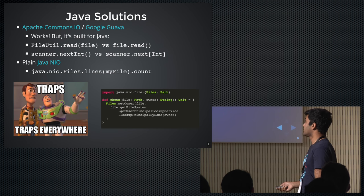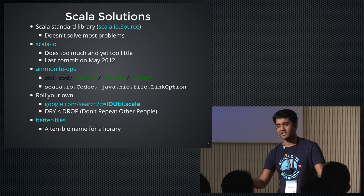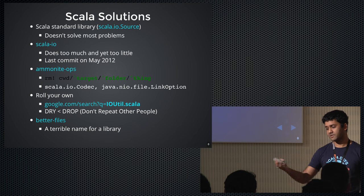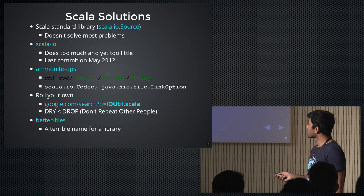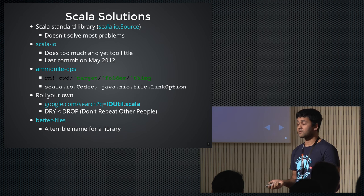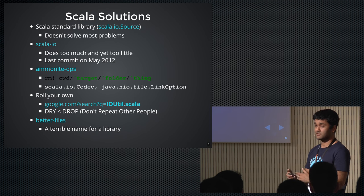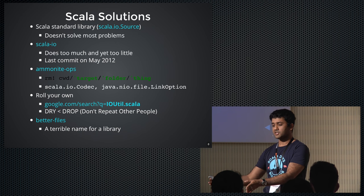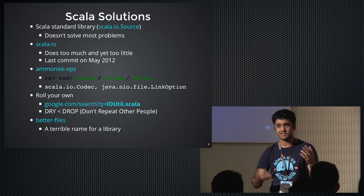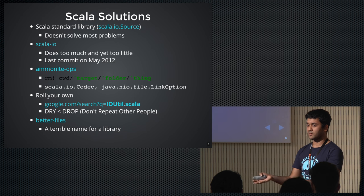So what exists in Scala? There's the Scala standard library, scala.io.Source. It doesn't solve most of the problems — it can maybe do reads and writes, but moving directories recursively, chmod, zip, unzip, listing, merging directories — it doesn't do all of that. There's also scala.io, mentioned a lot on Stack Overflow, but it seems abandoned — the last commit was in 2012, just updating the readme. It tries to introduce abstractions parallel to Java's print writers and buffered readers, so now you have two mental models to keep in your head.